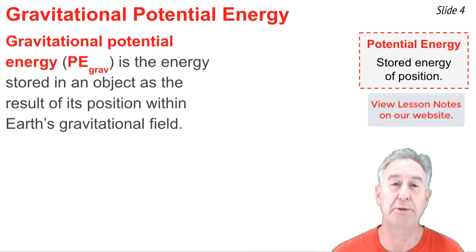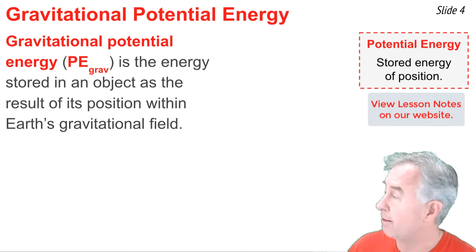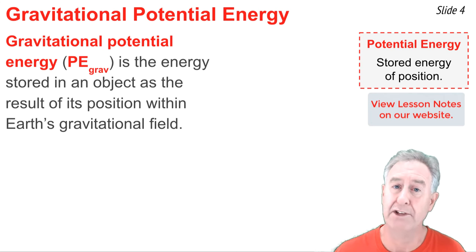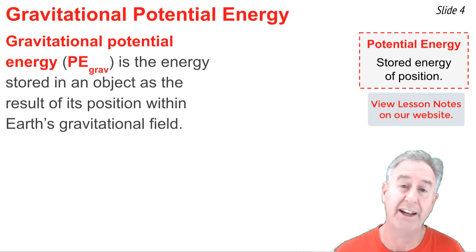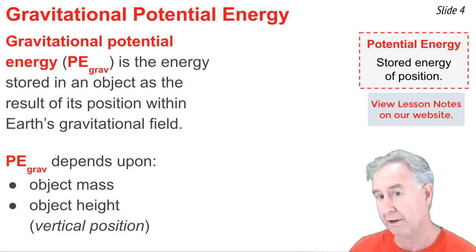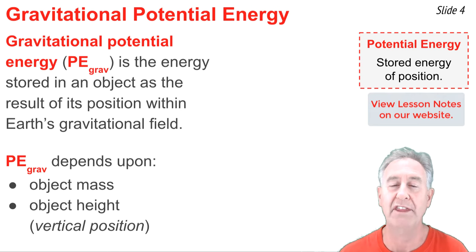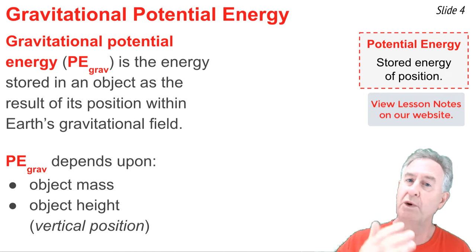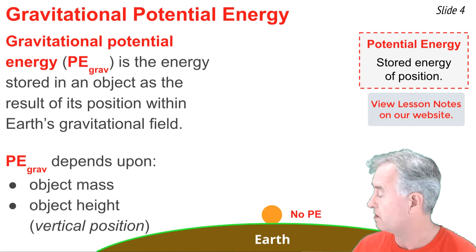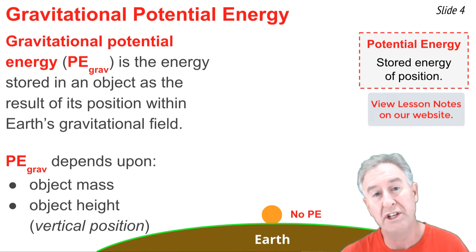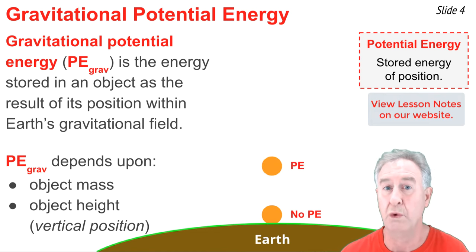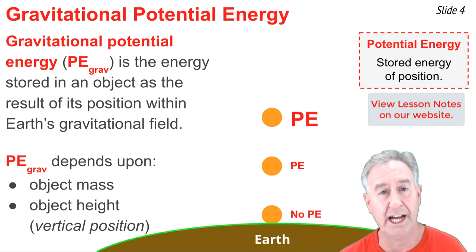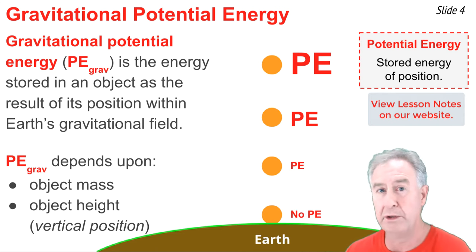Gravitational potential energy is the energy stored in an object as a result of that object's position relative to Earth's gravitational field. This type of energy depends on two variables: the mass of the object and the vertical position of the object, also known as the height. Here's the Earth and an object on its surface — it has zero height and thus zero potential energy. But if I apply a force to lift that object upward some distance, I do work upon it, giving it potential energy. The higher I lift it, the more work done and the more potential energy stored.